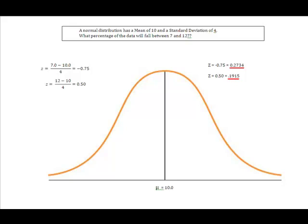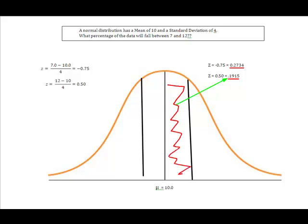Now I'm simply going to turn around and place those on my curve. And what it's going to tell me is that for my positive z-score of 0.50, that I know that 19.15% of my data is going to fall between the mean and this upper x value of 12.